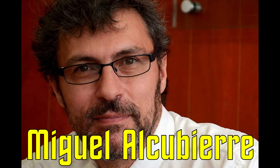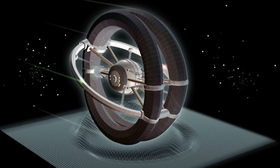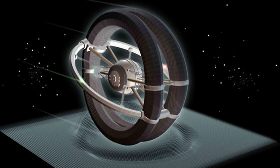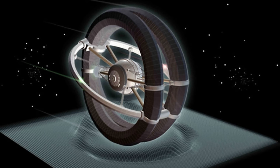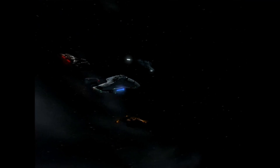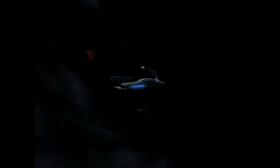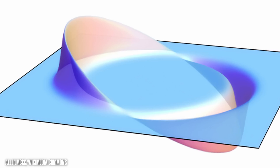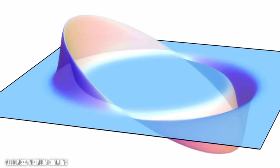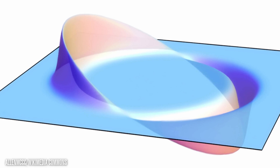Named after physicist Miguel Alcubierre, this speculative drive would mimic the expansion and contraction of spacetime — like in Star Trek — by creating a negative energy density field. Though this method is consistent with Einstein's field equations, there are other hurdles.